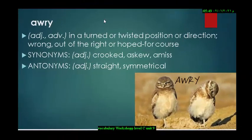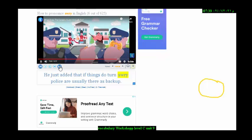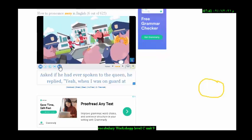Next word is awry. Awry is an adjective and an adverb. So you can use it to describe nouns or describe verbs or other adjectives. And it means in a turned or twisted position, like here, this bird on the right, its head is being tilted. So that's awry. And the synonyms are crooked or askew or amiss. And the antonyms are straight or symmetrical. Security. He just added that if things do turn awry, police are usually there as a backup.